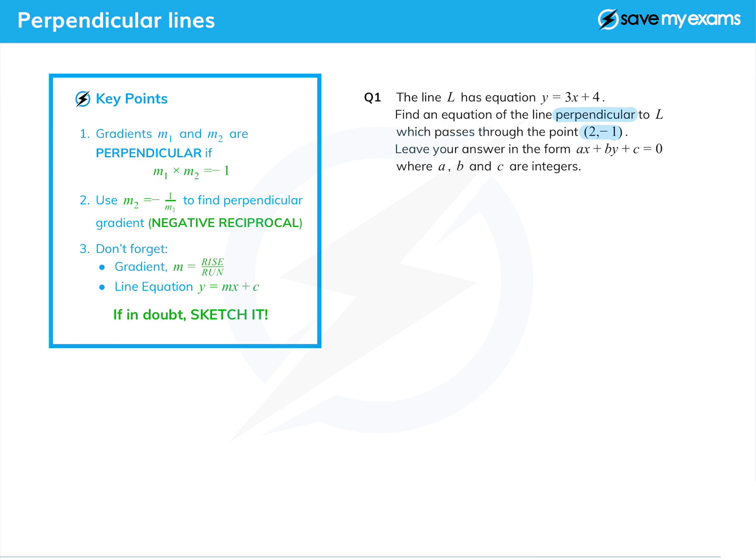From the straight lines tutorial, in order to find the equation of a straight line you need a gradient and any point on that line. We are asked to leave our answer in a particular form and that probably means we're going to have a fractional gradient.